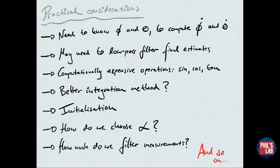As usual, we need to think of some practical considerations. To estimate theta dot and phi dot, our roll and pitch rates, we need to know phi and theta to do that body rate to Euler rate transformation. We may also need to low-pass filter the final estimates. There are computationally expensive operations, for example, sine, cosine, or tan.